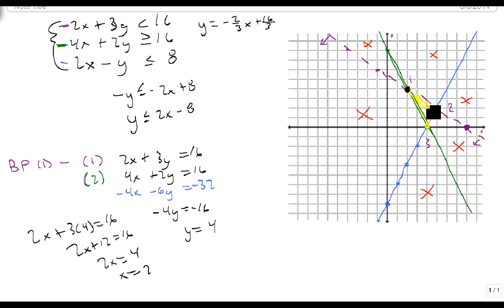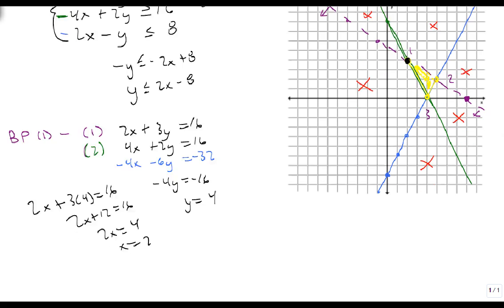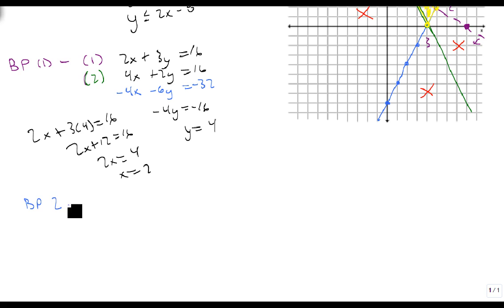My second point is the purple line and the blue line, so that's 1 and 3. So BP2 is 1 and 3. So again, it's 2x plus 3y equals 16.